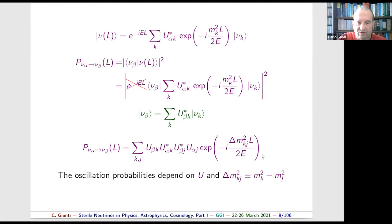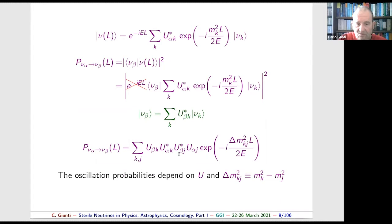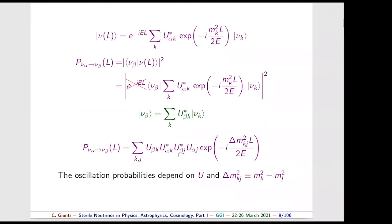This general expression for the probability is not limited to three massive states, so it applies also when the number of massive neutrinos is larger than three. The oscillation probability depends on elements of the mixing matrix and on the delta-m squares — these are the quantities determined by nature that we want to measure in neutrino oscillation experiments.